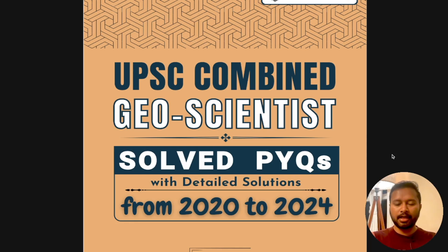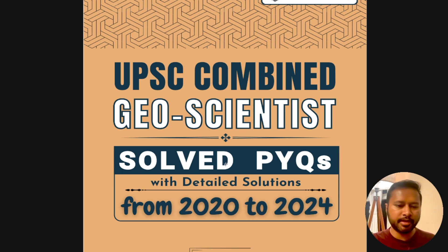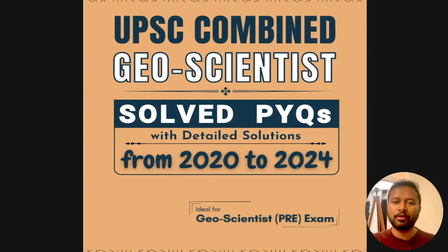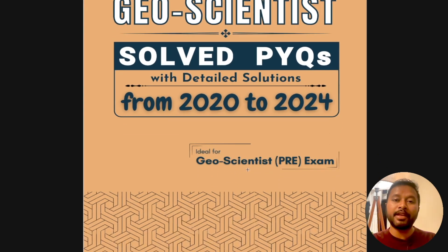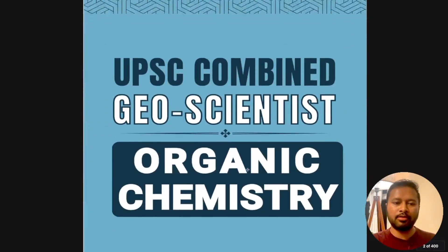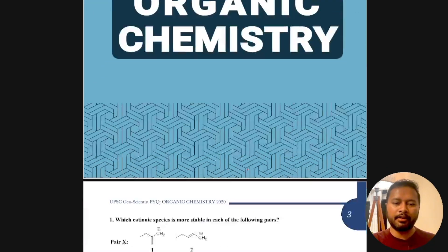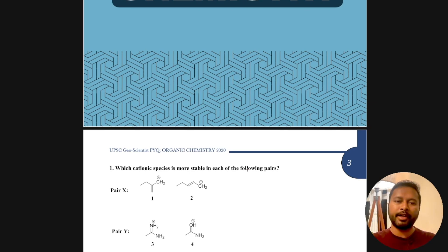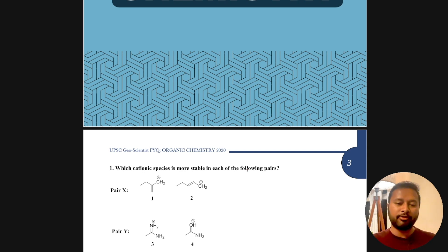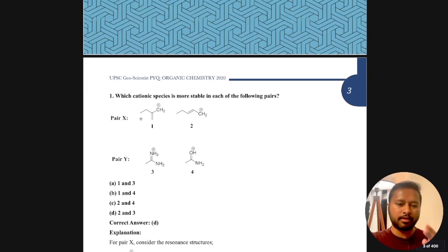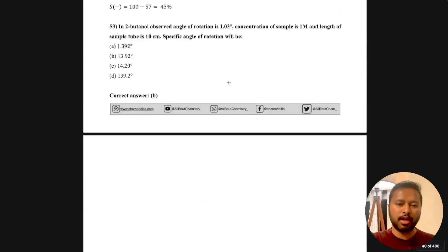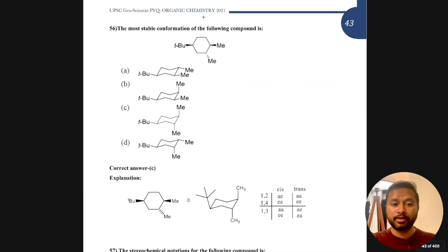This is the cover page of the ebook — it says 'UPSC Combined Geoscientist: Solved Previous Year Questions with Detailed Solutions from 2020 to 2024, ideal for geoscientist pre-exam preparation.' Coming down, the first part is organic chemistry, given in blue color, so when you are scrolling you don't get confused. All sections have different colors so you know where you are. The header also notes the subject and year — for example, organic chemistry 2020 UPSC geoscientist exam.